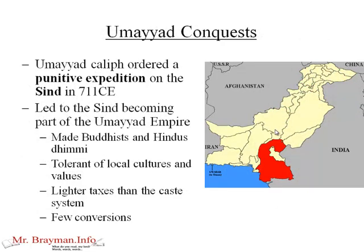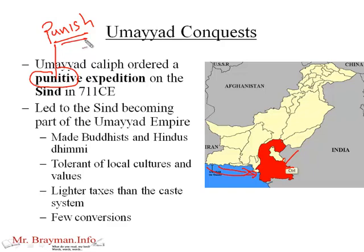It starts under the Umayyads. The Umayyad caliph ordered a punitive expedition on a region known as the Sind in 711 CE — punitive having the root word of punish. The locals had hurt some Muslim traders, and the Umayyads wanted to punish them. But this ended up leading to the Sind becoming part of the Umayyad empire.